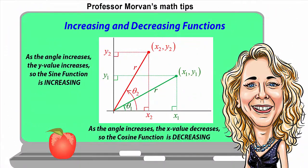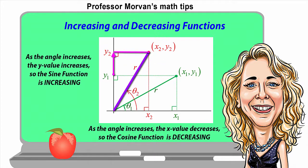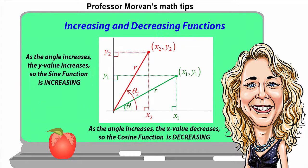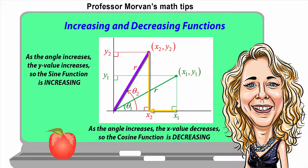To help you better understand increasing and decreasing functions, let's look at this diagram. As the angle increases, the y value increases, so the sine function is increasing. But as the angle increases, the x value decreases, so the cosine function is decreasing.